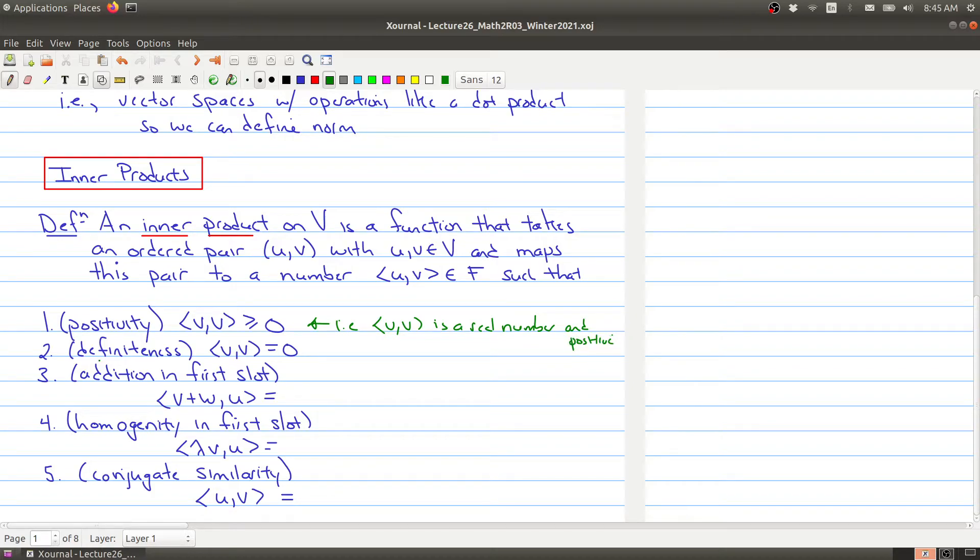We have what's called definiteness, which says that the only time the inner product takes v and itself to zero is if the vector v was zero. We have addition in the first slot, so notice that there's two slots in inner products, the order is important.